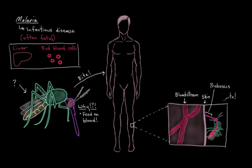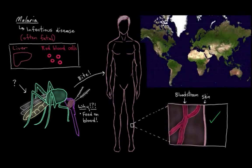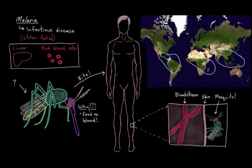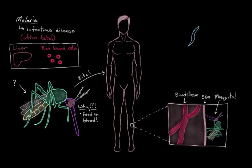Then she'll take off, all satisfied. And that's not usually a problem for us — people get bitten by mosquitoes all the time and they're fine. But some mosquitoes, particularly ones that live in tropical parts of the world, closer to the equator — like some African, Asian, and Latin American countries — carry a parasite called Plasmodium. We'll focus on Plasmodium falciparum, because this type causes the highest number of deaths in humans.